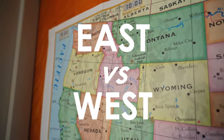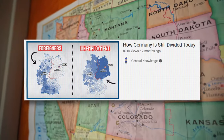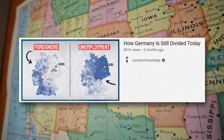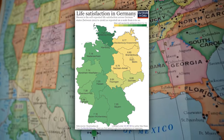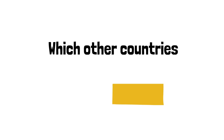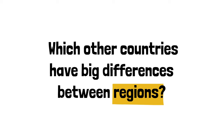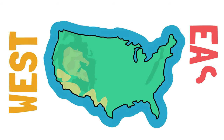East versus West. A while back, I did a video comparing the two sides of Germany. Even though the country reunited in the late 20th century, many factors still point out deep differences between the two sides of the country. This got me thinking — which other countries have big differences between regions? In this video, we're going to be comparing two regions of the United States: the East versus the West coasts.